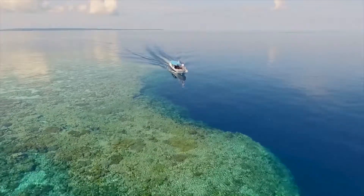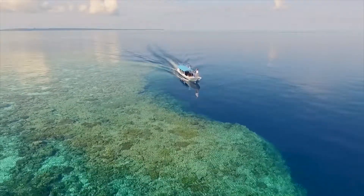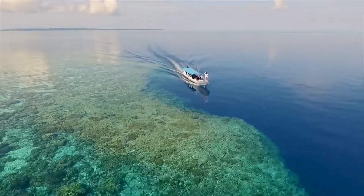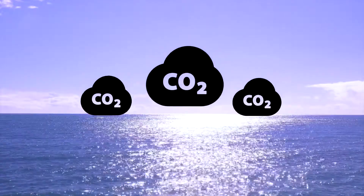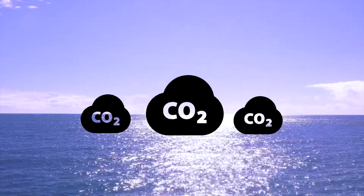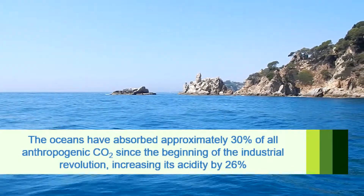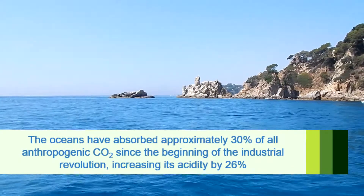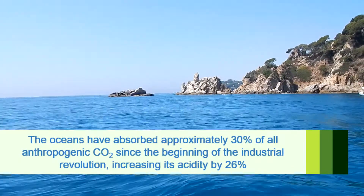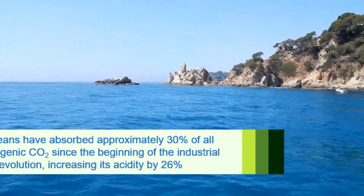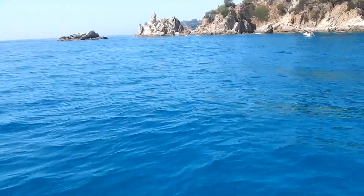In the case of the sea and the oceans, the decrease in pH is produced due to the absorption of carbon dioxide from the air. This absorption of CO2 occurs naturally in a process known as the carbon cycle, which helps to compensate for the high concentrations of CO2 released by human activities, thus mitigating climate change.